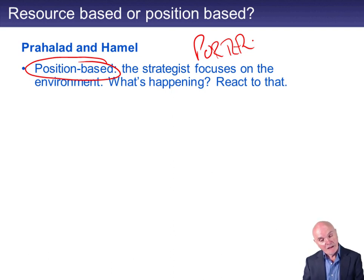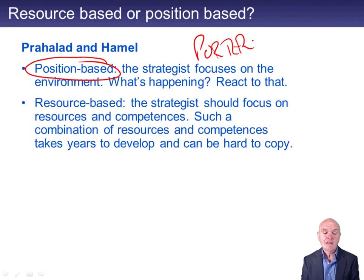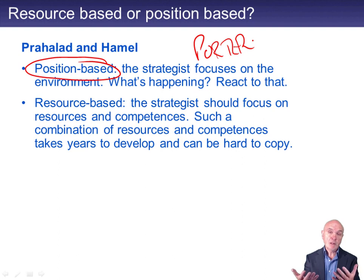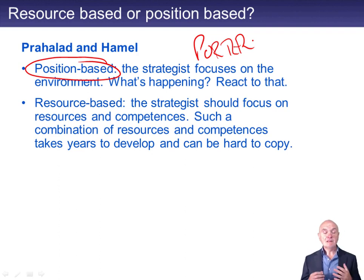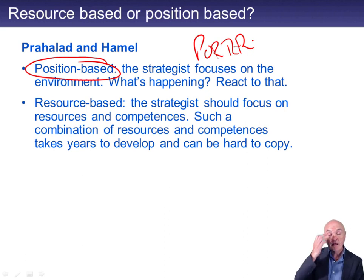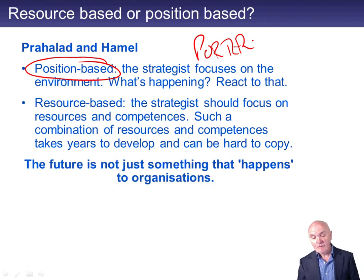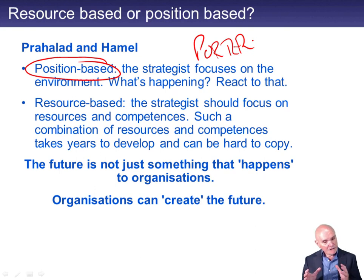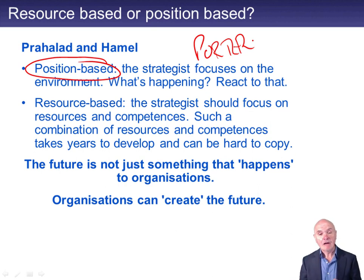Then, really in the 1990s, Prahalad and Hamel came up with a different idea. They said: if you've been really good in your existing production, if you have strategic capabilities, it's taken you a long time to build up these resources and competences. If you stop using those and start doing something else, you're starting from scratch again. So don't be too fast at abandoning your unique resources and core competences. See if you can use them in some other way rather than being too quick to shift your position.